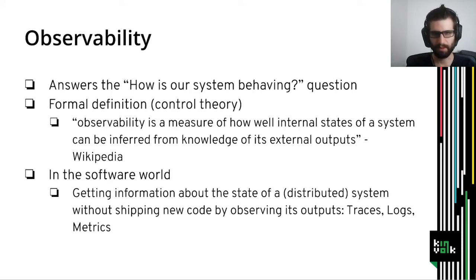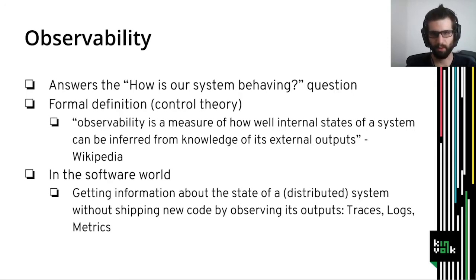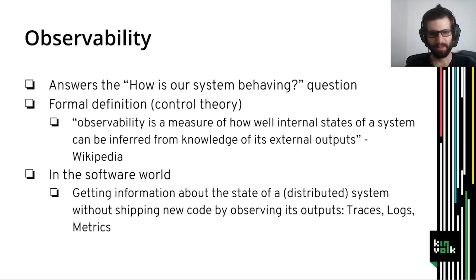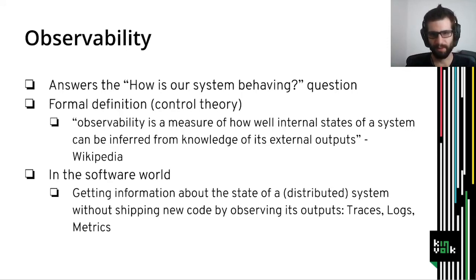I will also show you the concept of automatic instrumentation and will present a demo about that. So let's get started with observability. Observability is a mechanism that allows us to answer the question: how is our system behaving? There is a formal definition that comes from control theory that says observability is a measure of how internal states of a system can be inferred from knowledge of its external outputs.